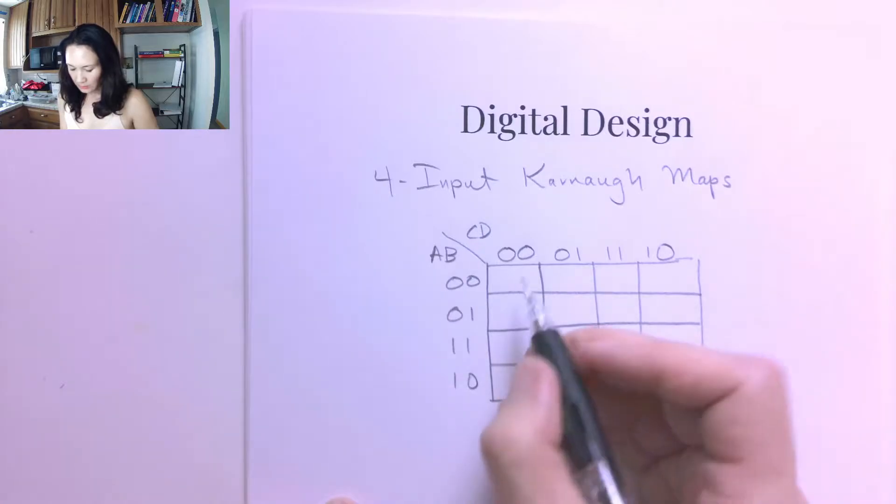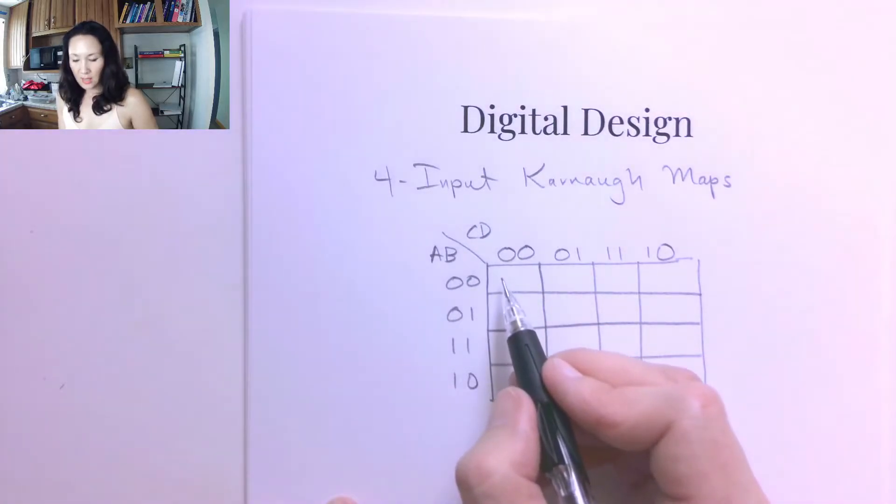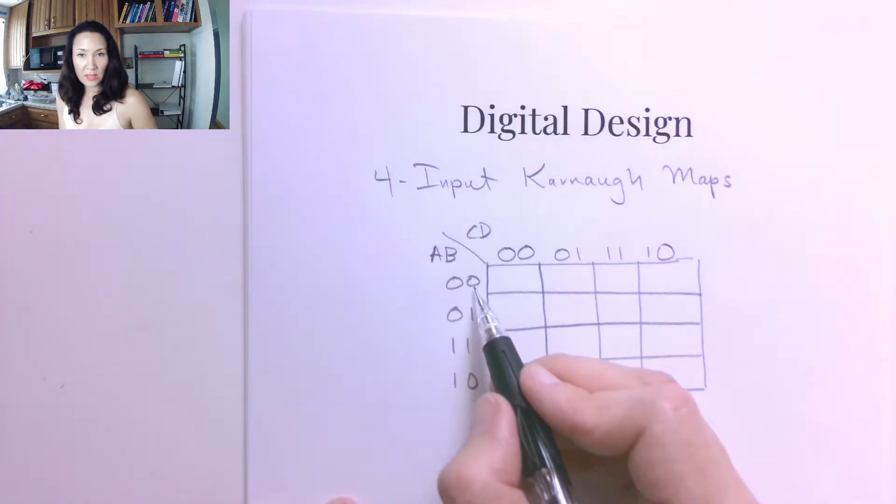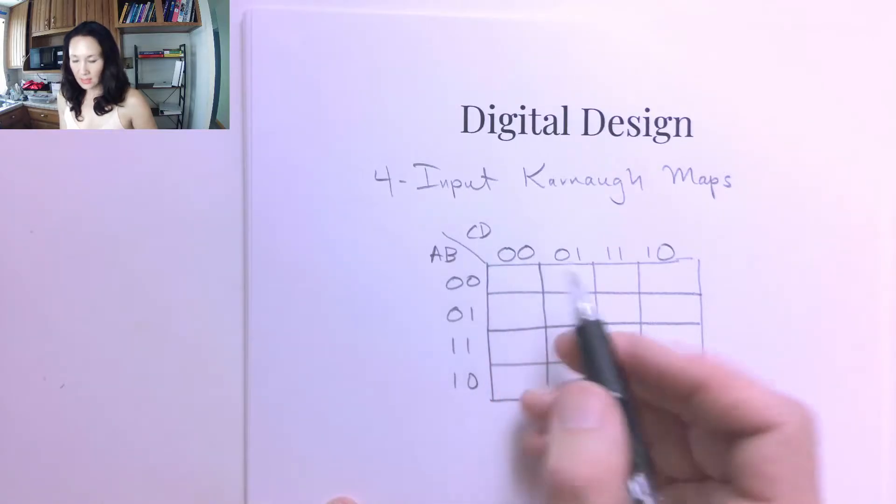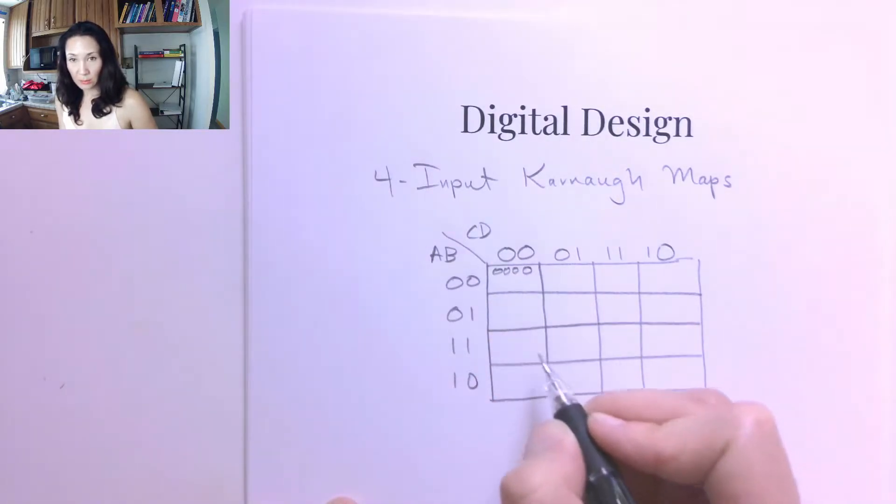So what would those be? This first cell is when A is 0, B is 0, C is 0, and D is 0. So this is 0, 0, 0, 0 input case, so this is min term 0.